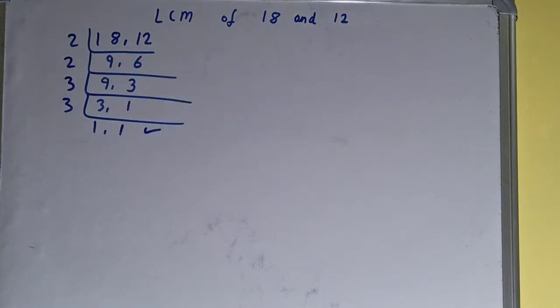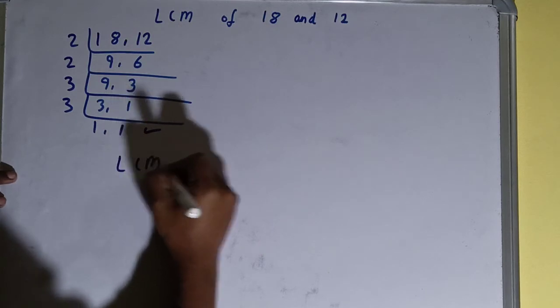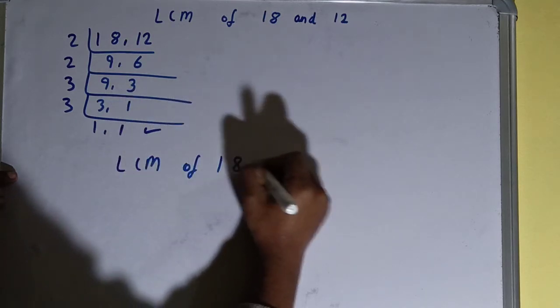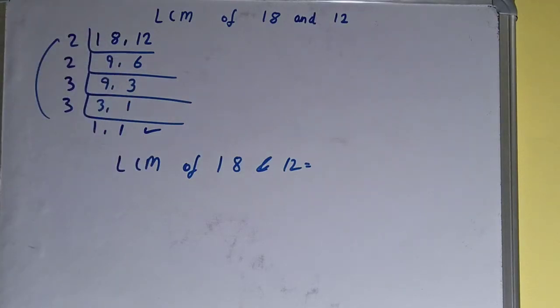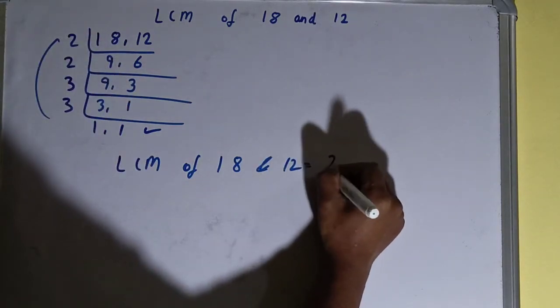Once we have that, we need to stop and we need to do one last thing. That is, LCM of 18 and 12 is equal to multiply whatever you have got on the left-hand side: that is 2 × 2 × 3 × 3.